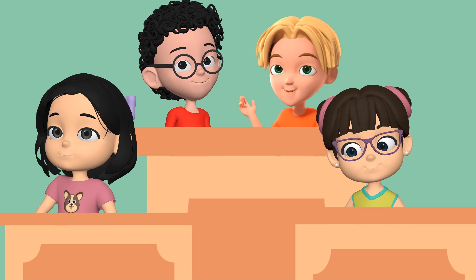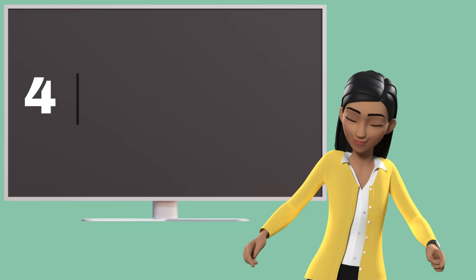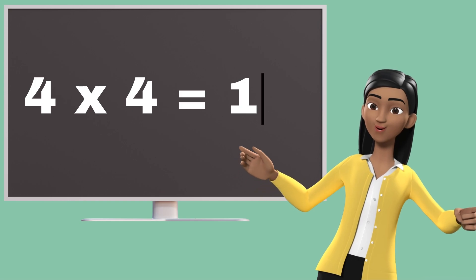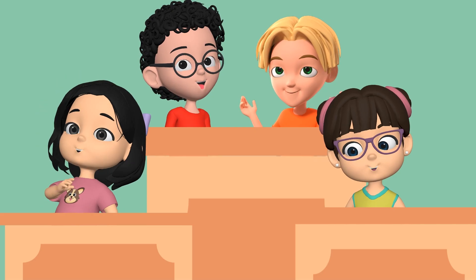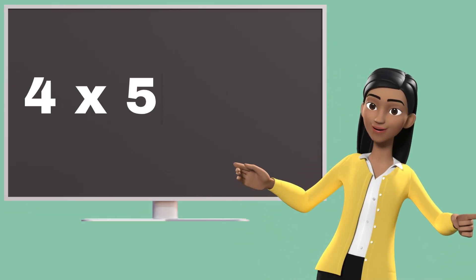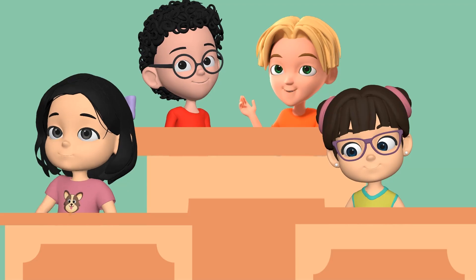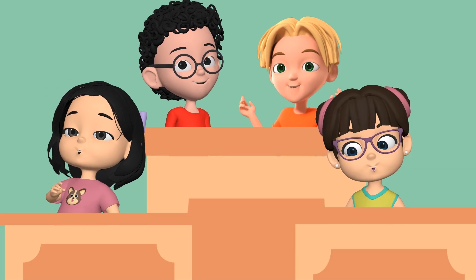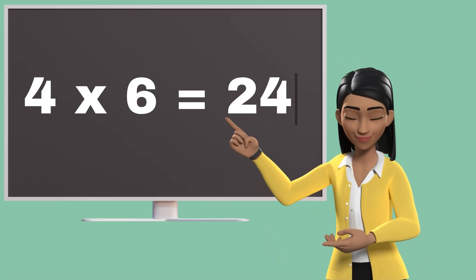Four threes are twelve. Four fours are sixteen. Four fives are twenty. Four fives are twenty. Four sixes are twenty-four.